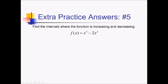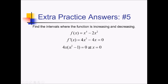To find increasing and decreasing intervals for this function, we'll start by taking the derivative and finding critical values. I have 4x cubed minus 4x. Setting that equal to 0 — I can factor a 4x out of everything, leaving me with x squared minus 1. We see that this is going to equal 0 if x is 0 or plus or minus 1. So those are my three critical values. Here is an f prime number line with negative 1, 0, and 1 as our critical values.